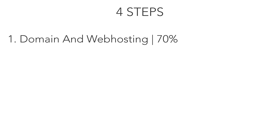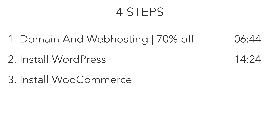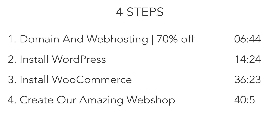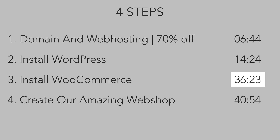Let me show you the four steps we will take to create a beautiful webshop. First, if you don't have it yet, I'll show you how to get your own domain name and web hosting — and I can give you 70% discount. After that, we will install WordPress, then install WooCommerce, and then create our amazing webshop. If you already have a domain name, web hosting, and WordPress installed, I'll show you on screen where to go to install WooCommerce and follow along in this tutorial.